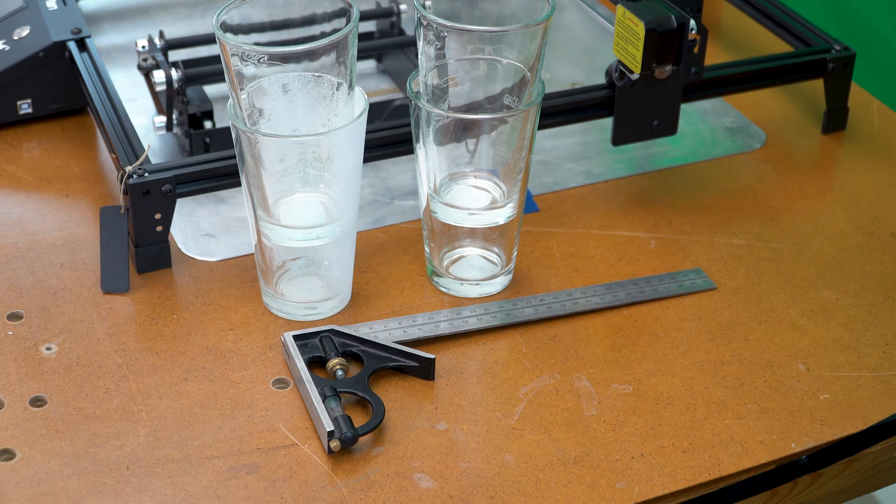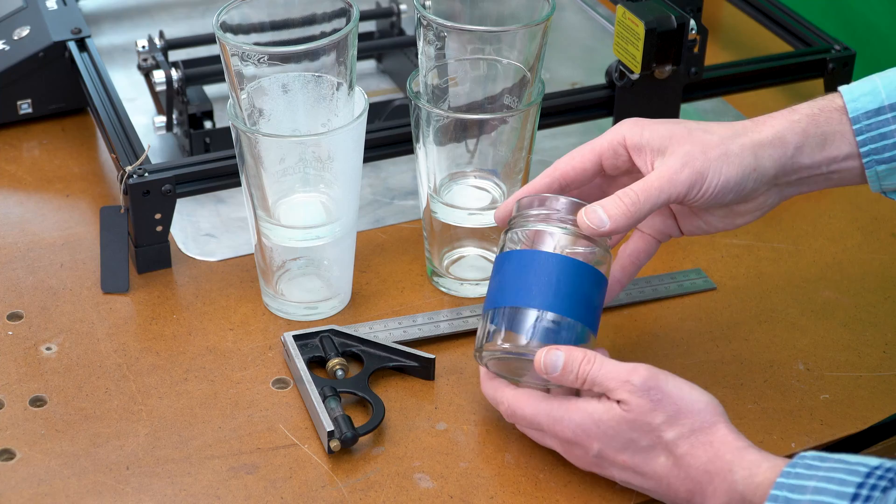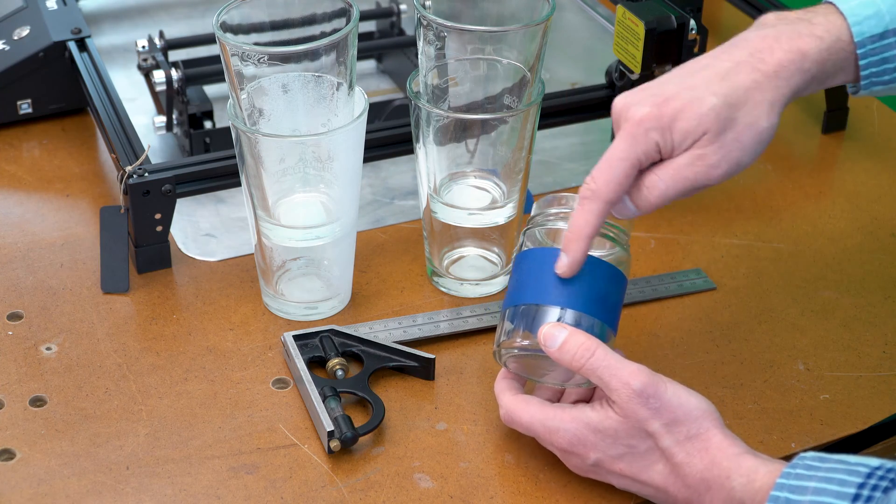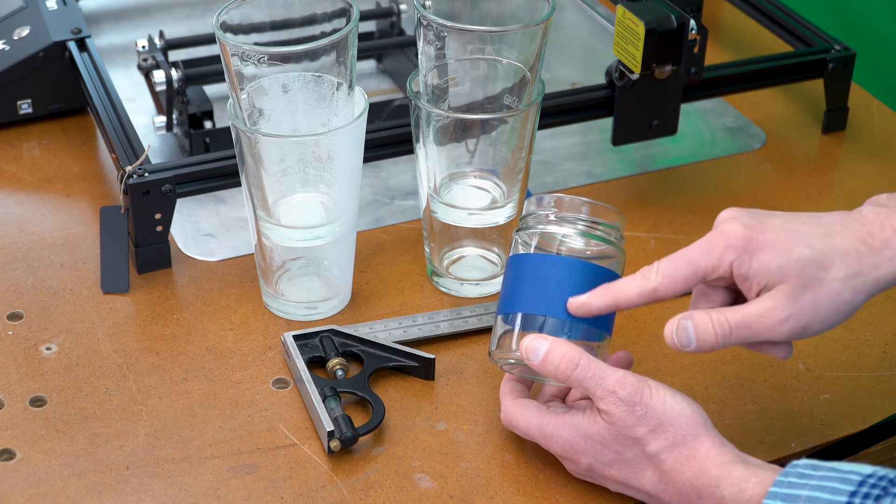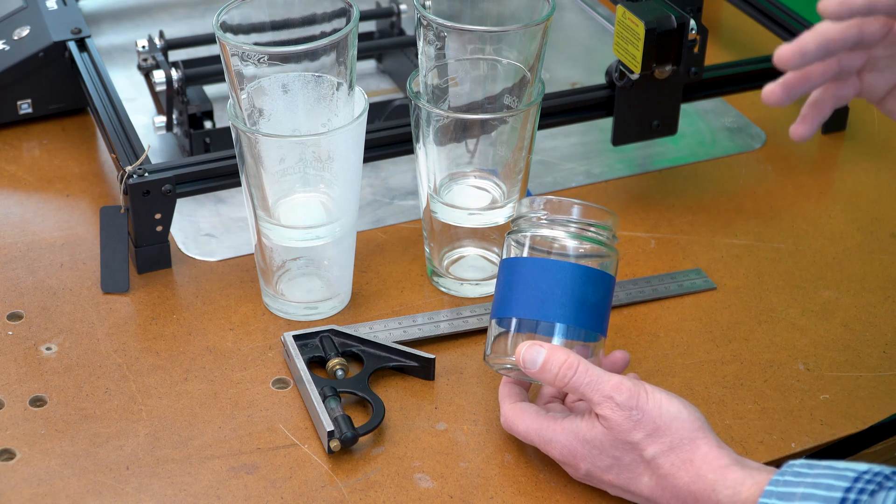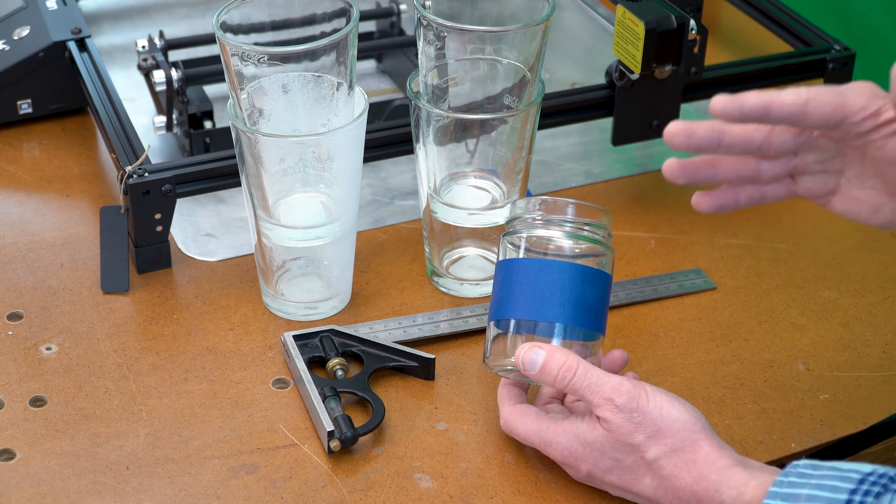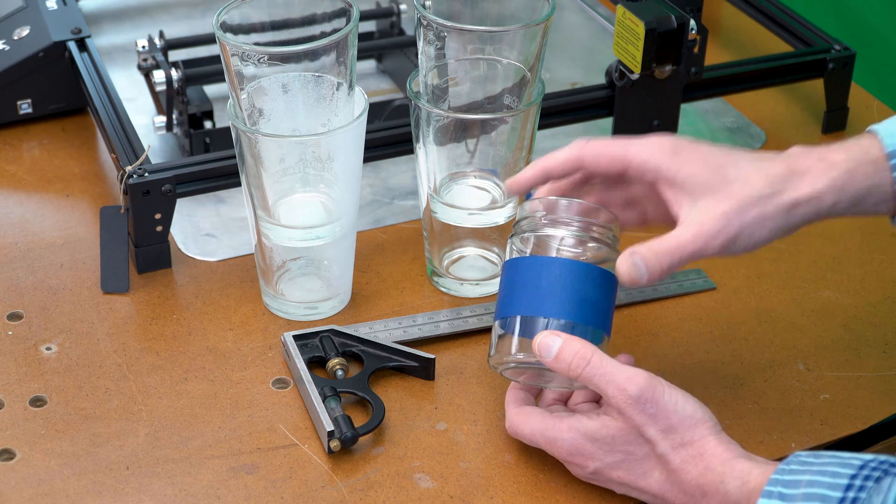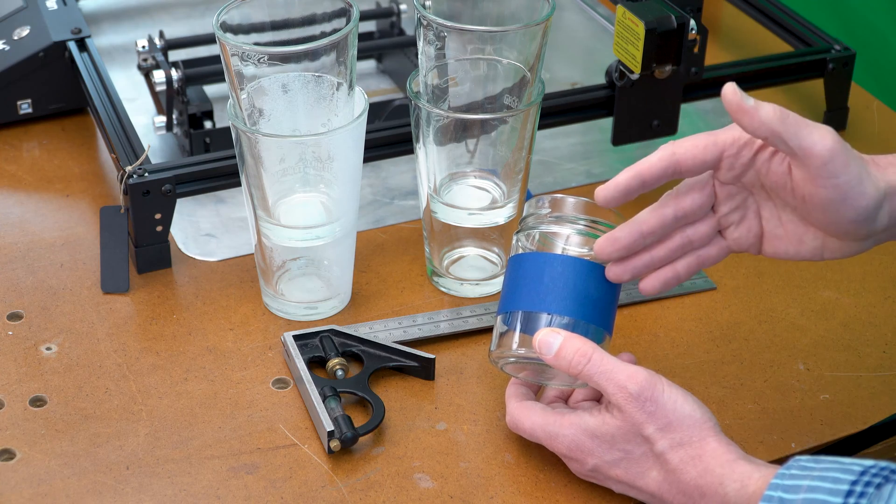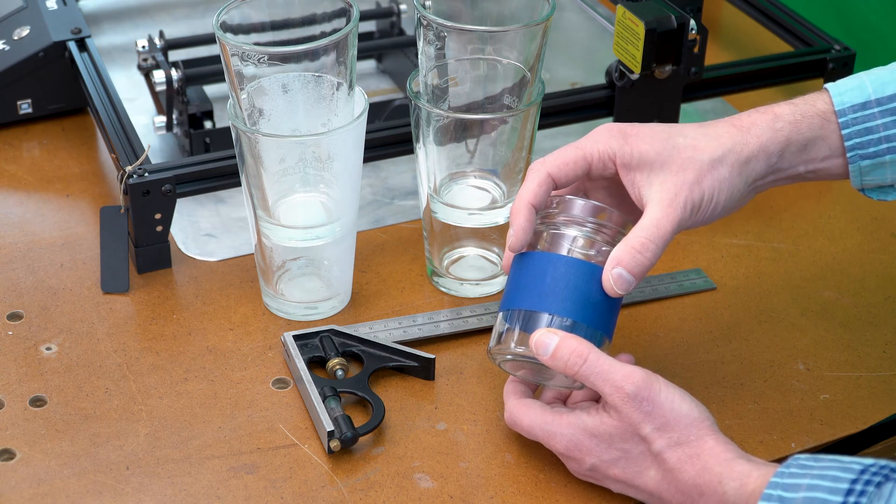To calibrate the rotary attachment, I'm going to use a glass jar that has a piece of blue painter's tape wrapped around it. I like this blue painter's tape because it allows me to run faster speeds at a lower power level and if I don't like the results that I'm seeing, I can peel this blue painter's tape off very easily and apply a new piece.